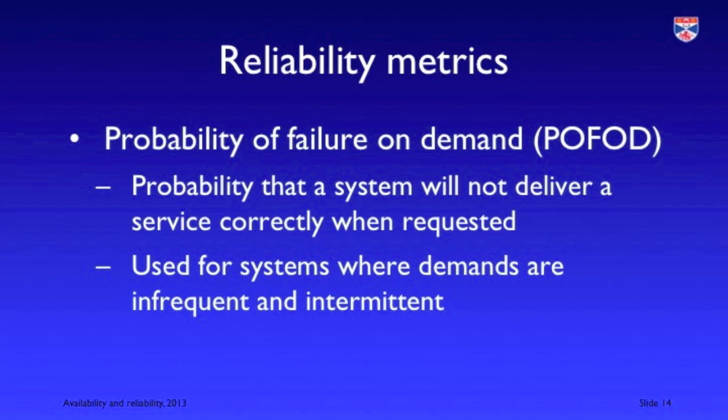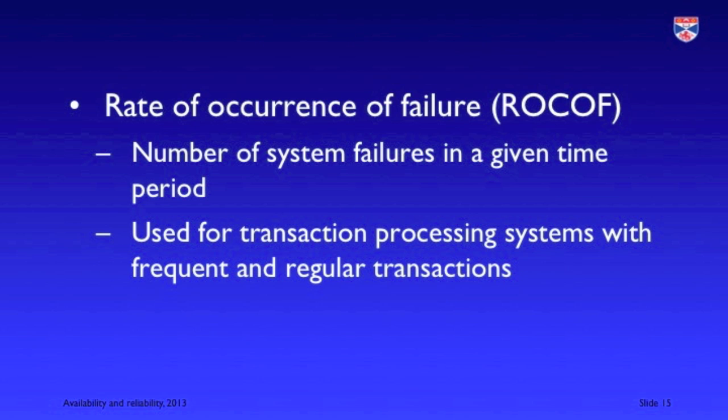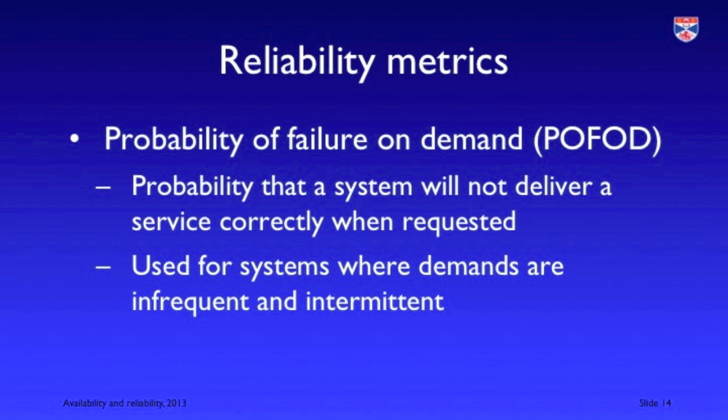We typically use two metrics for reliability. The probability of failure on demand (POFOD) is the chances that when a demand is made for some kind of system service, the system will respond correctly. The rate of occurrence of failure (ROCOF) is the number of failures that happen over a particular time period or over a given number of transactions. We use these two metrics because the appropriate one depends on the type of system. For a transaction processing system handling potentially thousands of transactions per second, ROCOF is the right metric. On the other hand, for a safety system that is only triggered in the rare event of things going wrong, POFOD is the right one, since we don't see enough failures over time to use ROCOF.